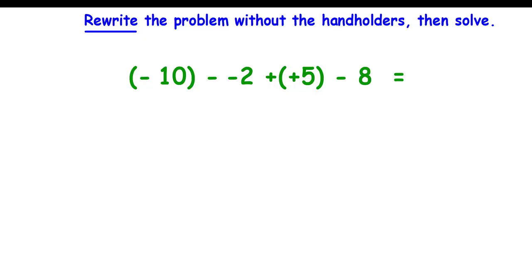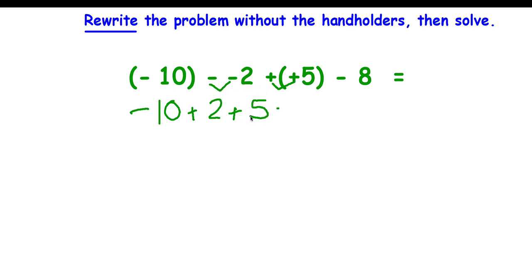I want you to go ahead and rewrite this: first write it down and then rewrite it without the hand holders. Use your notes, solve it, and tell me what the answer is. I'm going to get rid of my hand holders and clean this problem up so it's easier to look at and solve. There's no hand holder with negative 10 — the parentheses are there to help you understand it better, but I want to get rid of them. Down comes my negative 10. The hand holders are the same, so I replace it with a positive and bring down the 2. More hand holders — they're the same, I replace with a positive and bring down the 5. There's no hand holder in front of the 8. These two problems are equal, but the second one is easier to solve.